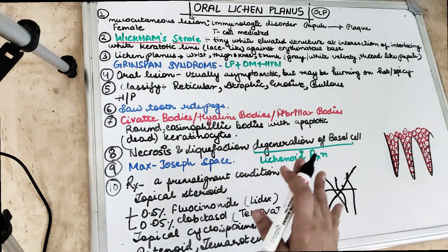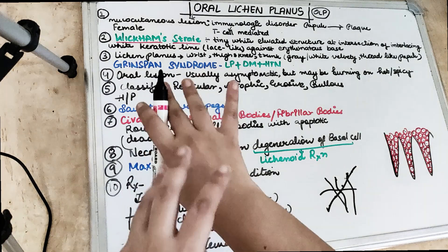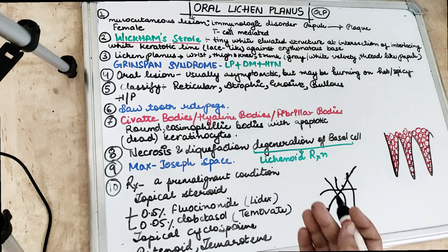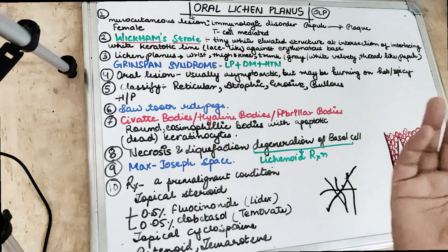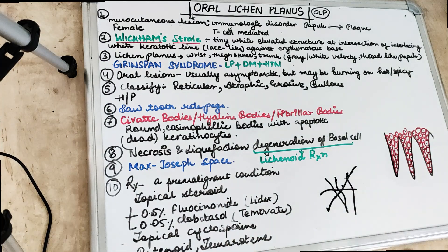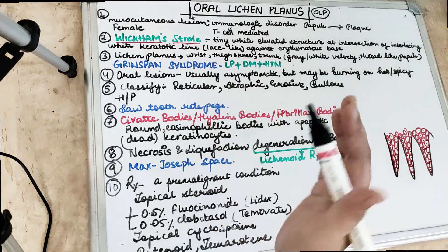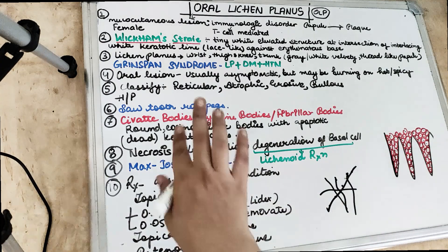Wickham striae are a typical feature of oral lichen planus, and the lesions are bilateral and symmetrical. They involve the flexor surface of the wrist and forearm, followed by the inner aspect of the thighs and knees, and then the trunk. These lesions radiate into white or gray velvety thread-like papules arranged in angular, linear, or retiform fashion, even in a ring-like pattern. Sites commonly involved include the buccal mucosa (most common), tongue (second most common), gingiva, floor of the mouth, lips, and palate.